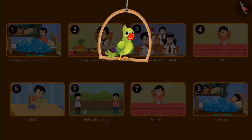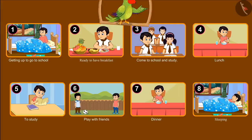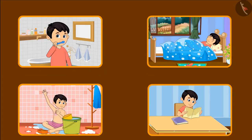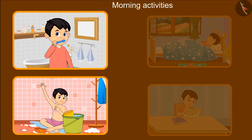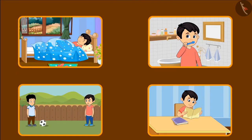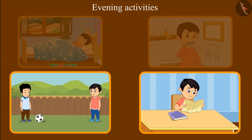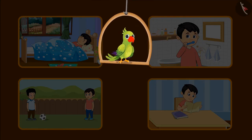So children, have you ever thought about your routine? Here are some activities that take place throughout the day. Can you tell which of these activities we do in the morning? Yes, in the morning we bathe and brush our teeth. And now, can you tell us what do we do in the evening? You are absolutely right children, we play in the evening and we also study. These are the activities that happen at different times throughout our day.